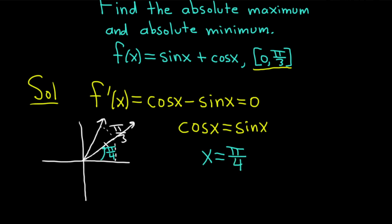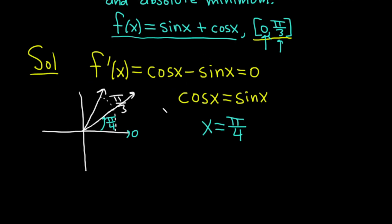Note that pi over 4 is between 0 and pi over 3, so it's certainly in this interval. Now that we have the critical number, which is pi over 4, what we do is check the critical number and the endpoints, 0 and pi over 3. We plug them into our original function — the biggest number we get is the maximum, and the smallest we get is the minimum.